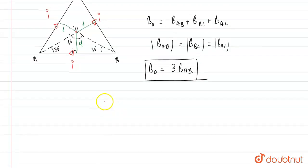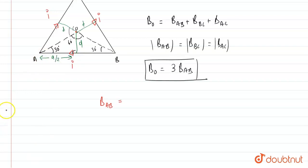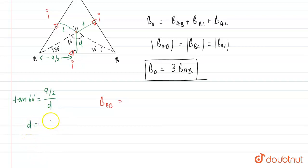Applying the formula, the magnetic field due to wire AB at the center: from the diagram, the half-length of AB is a/2. Using tan 60° = (a/2) / D, we get D = (a/2) / tan 60° = a / (2√3). That is the perpendicular distance D.